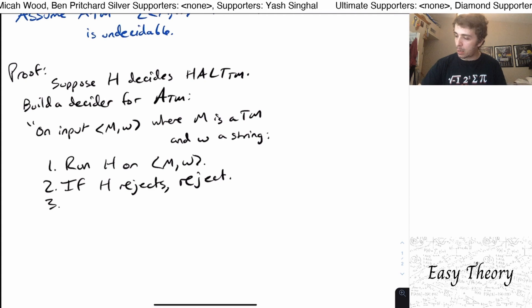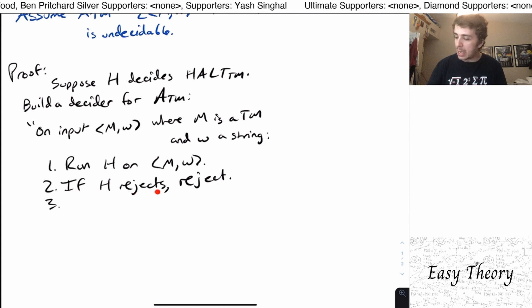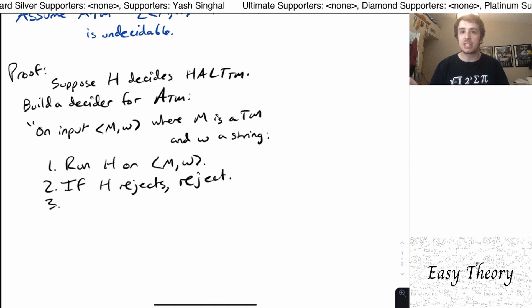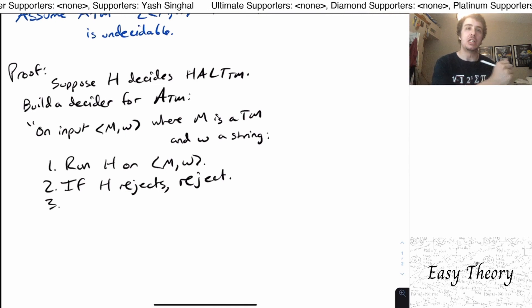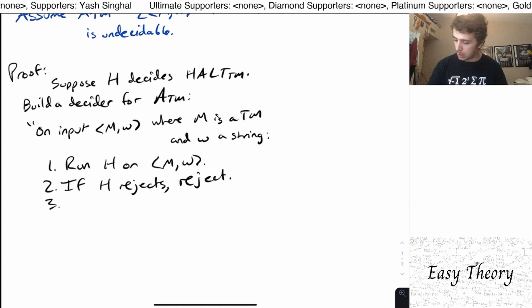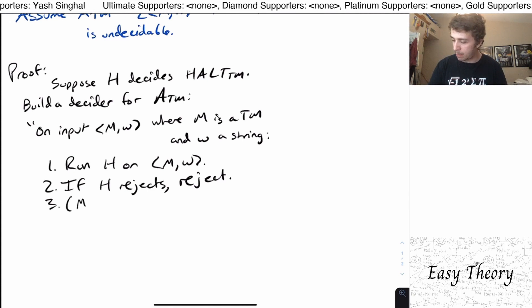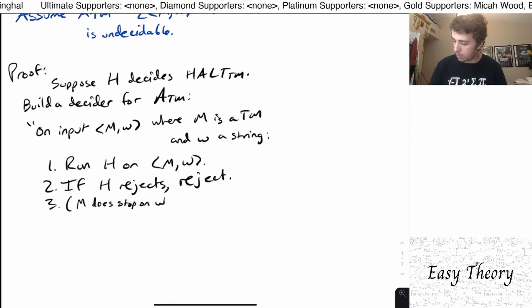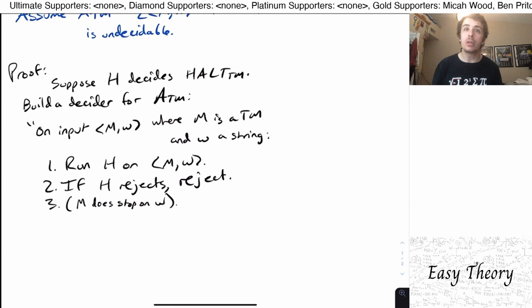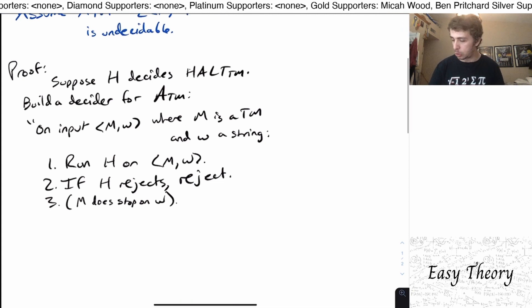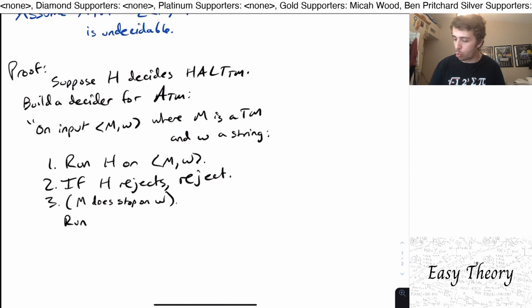So then here, if H doesn't reject, which means that it accepts, which this implies that M does stop on W, it doesn't run forever. So what we can say here is that M does stop on W. Well, now we can be certain that it stops on W. So now we can actually run the machine on input W. So let's actually run M on W this time.